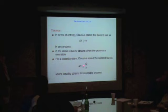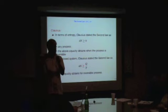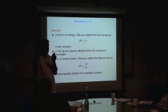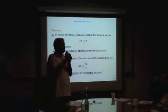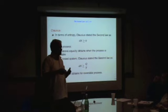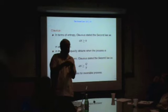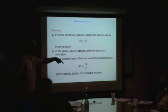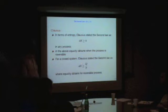For a closed system, Clausius stated the second law as DS greater than Q over T. Essentially it means that when you go from A to B in a quasi-static reversible way — that is, the system remains in equilibrium throughout, meaning the process is extremely slow — DS equals Q over T. This is an idealization we call quasi-static, almost a static process. For any process that is not quasi-static, the change in entropy is always greater than what you calculate for a quasi-static process. For an irreversible process, DS is always greater than Q over T.